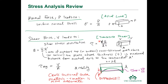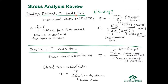We have the normal force, the shear stress, and also the transverse shear equation. The third loading condition is the bending moment, which leads to a longitudinal stress distribution: sigma equals My over I, where M is the applied moment, y is the distance from the neutral axis, and I is the moment of inertia. For a curved beam, the equation is M times y over A times e times (r minus y).